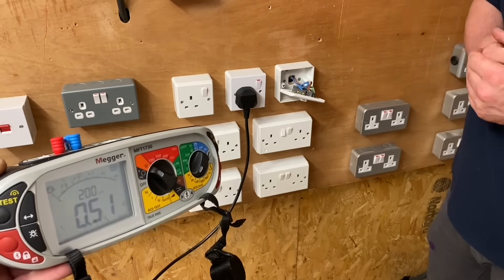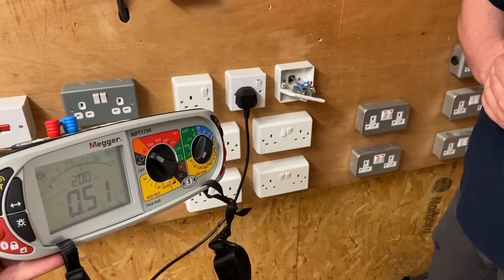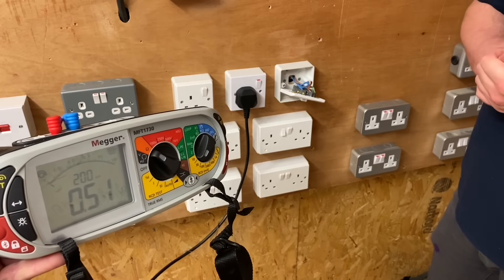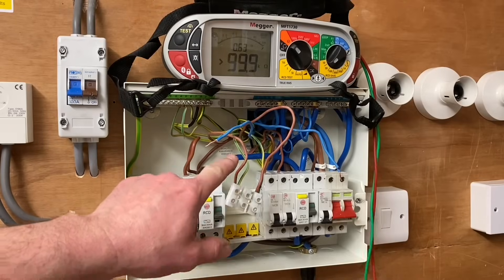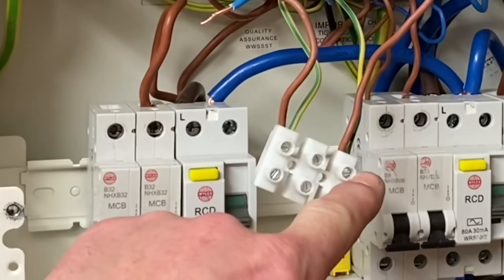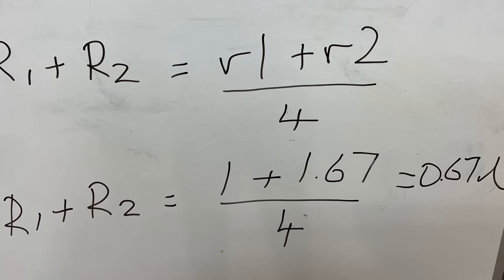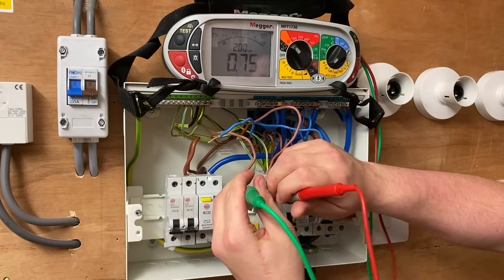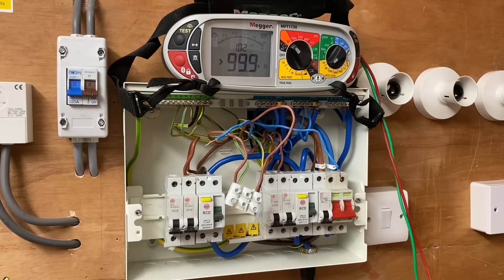Now for stage two between line and neutral — I'm happy with all of the results we've got from these socket outlets. Next, we're going to link together opposite line and opposite CPC in our consumer unit and repeat the test — that's going to be stage three of our ring final circuit continuity test. In the consumer unit we've now got opposite line and opposite CPC linked together. I calculated this to be 0.67 ohms, so let's see the measured value across the connector blocks. We've got 0.63 ohms — that's fine, close enough.